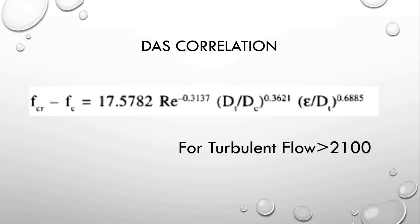The next correlation is the Dust correlation, which can be applied only in the turbulent region. Here, epsilon is the relative roughness, dt is the diameter of the tube or pipe, and Dc is the mean diameter of the coil. dt is the inner diameter of the coil and Re is the Dean number.